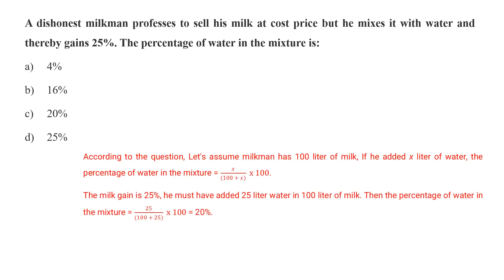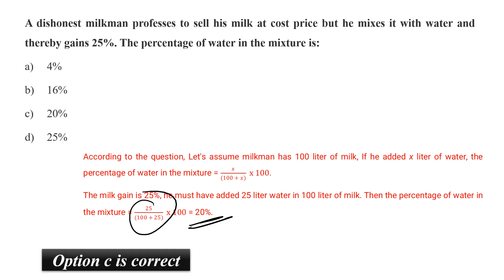A dishonest milkman professes to sell his milk at cost price but he mixes it with water and thereby gains 25%. The percentage of water in the mixture is 4%, 16%, 20%, or 25%? As per the question, when a person adds water to milk, then only he gets 25% gain. So if we assume that the initial milk was 100 liters and the gain is 25% upon water mixing, then the water content should be 25 divided by 100 plus 25, so 25 divided by 125 into 100, that means 20%. So the water content in the mixture should be 20%, that is option C.